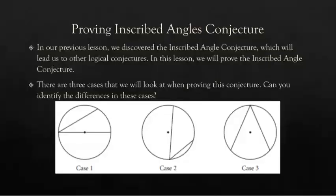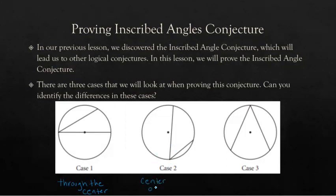In our previous lesson we discussed the inscribed angle conjecture, which can lead us to other logical conjectures. In this lesson we'll prove the inscribed angle conjecture. There are three cases we can look at when proving this conjecture. In case one, the angle goes through the center of the circle. In case two, the center is outside the angle. In case three, the center is inside the angle. We will look at all of these differently to prove them.